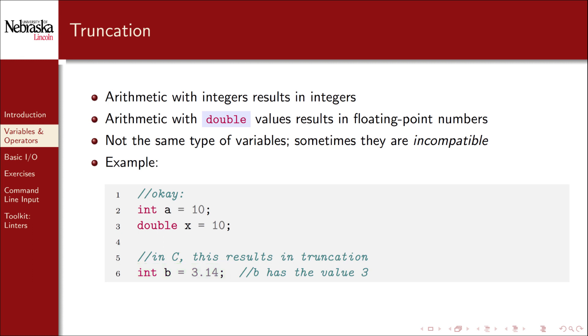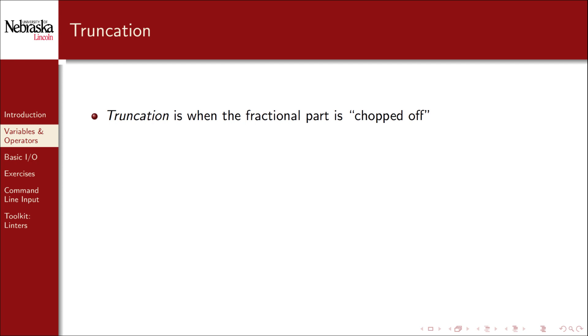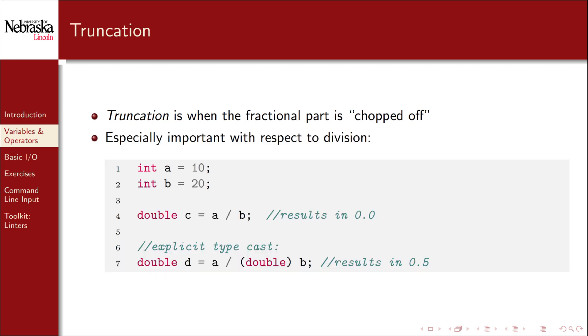Integers do not have a fractional part, and so something called truncation occurs. In this instance, the fractional part is ignored, and so b gets a value of 3 instead of 3.14. Truncation occurs when the fractional part of a value is chopped off and thrown away. This is not the same thing as rounding up or down. It doesn't matter what the fractional part is, it just gets ignored. This is especially important to keep in mind when dealing with division.